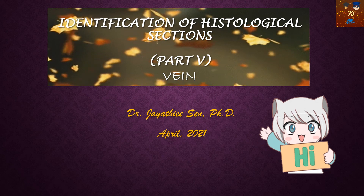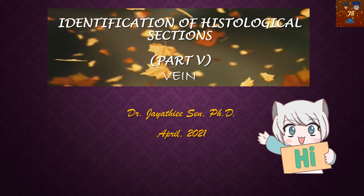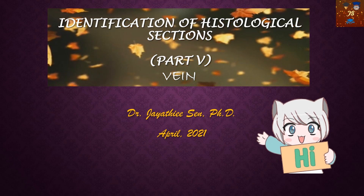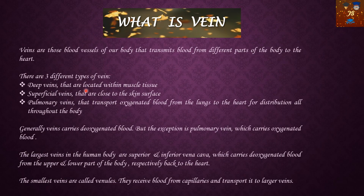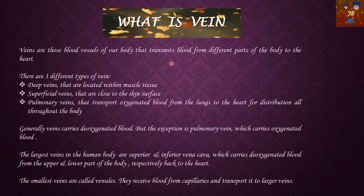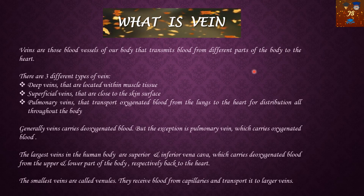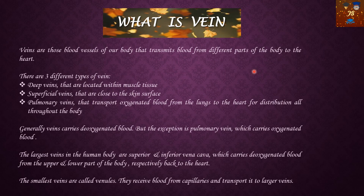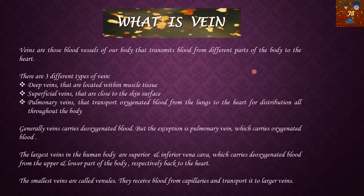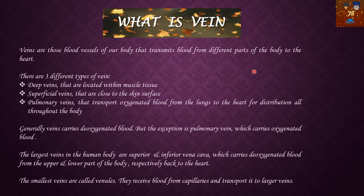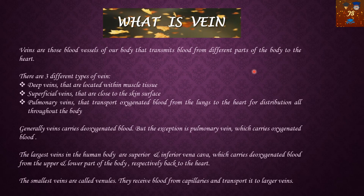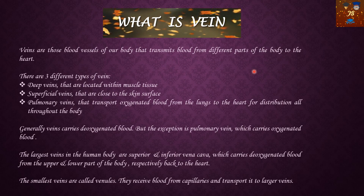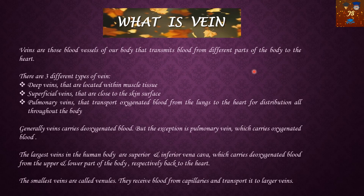Today we are going to discuss the identification of the histological section of a vein. Veins are those blood vessels of our body that transmit blood from different parts of the body to the heart. In a previous discussion, we covered arteries, which carry blood from the heart to different parts of the body to supply oxygen. Veins do the opposite function — they carry blood after oxygen has been used in various organs, back to the heart for further oxygenation.